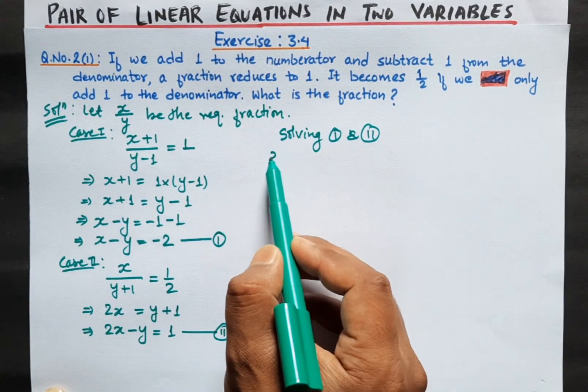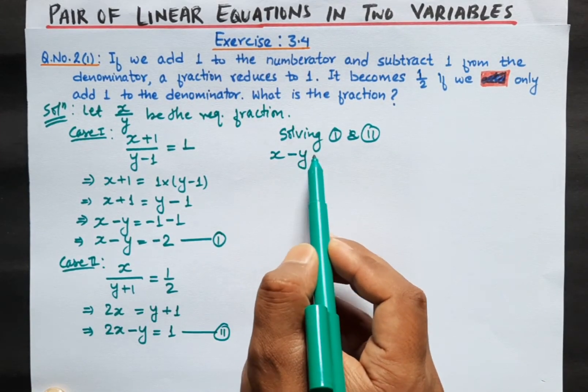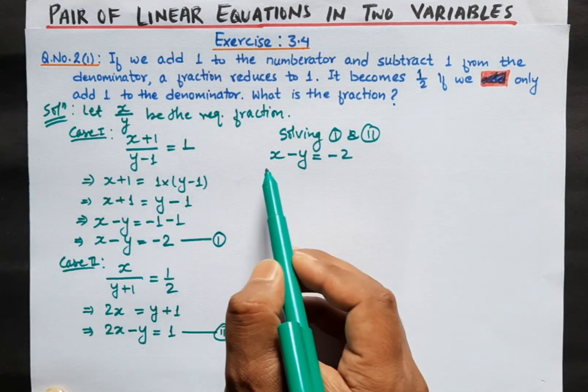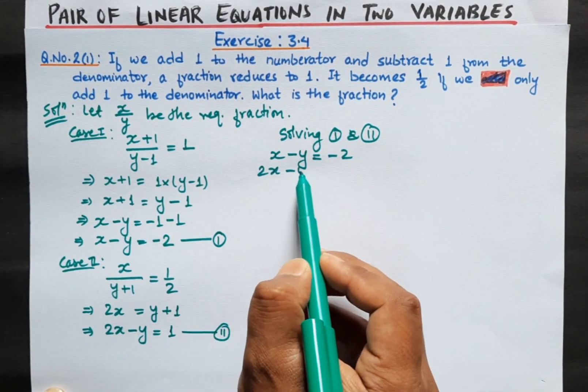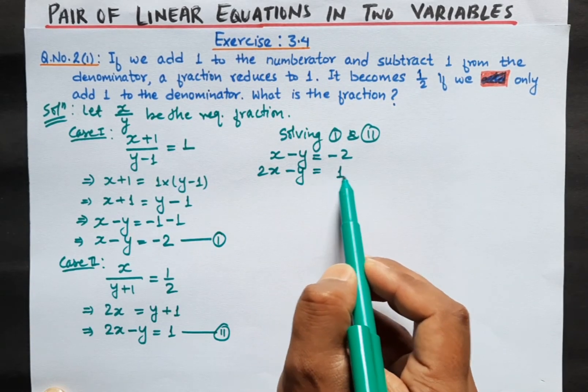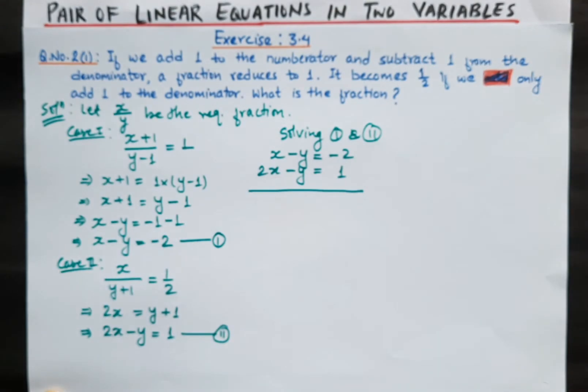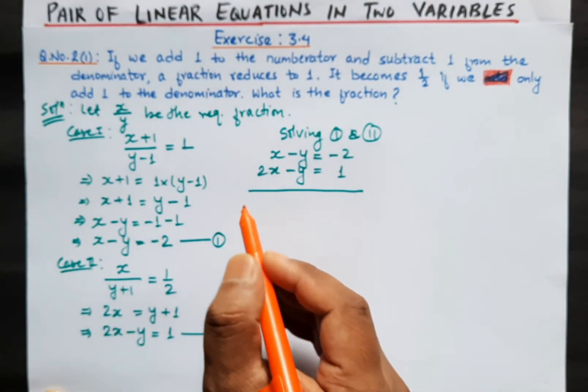Solving equations 1 and 2: equation 1 is x minus y equals minus 2, and equation 2 is 2x minus y equals 1. The coefficient of y is the same and the sign is also the same, so we have to subtract.